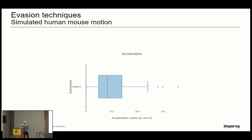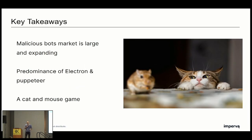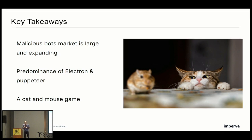The question is not if we can detect the usage of this bot using this technique, but only how much time we need to be accurate enough in our detection. Key takeaways: the malicious bot market is very large and expanding. There is a predominance of Electron framework and Puppeteer as headless browser technology. And lastly, it's a cat-and-mouse game — bots are always improving their techniques, and we need to track their evolution to continue blocking them. But knowing the bot source code is a great advantage.